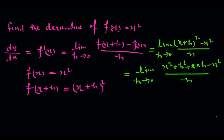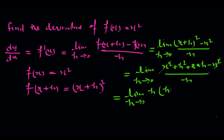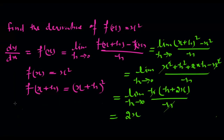Expanding: limit h tends to 0 of x squared plus h squared plus 2xh minus x squared upon h. The x squared cancels with the negative x squared. We take h common from h squared plus 2xh, giving h(h plus 2x) upon h. The h cancels, and now we put h equal to 0.